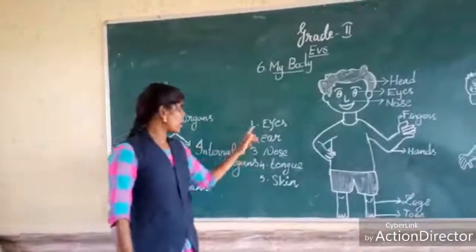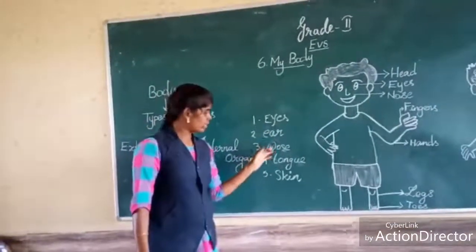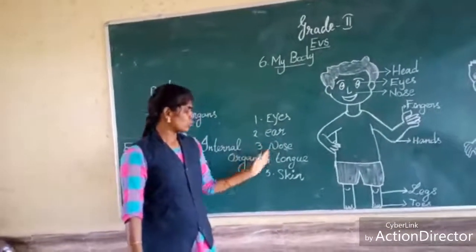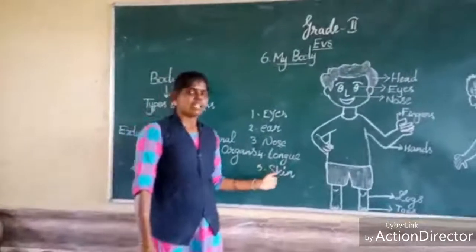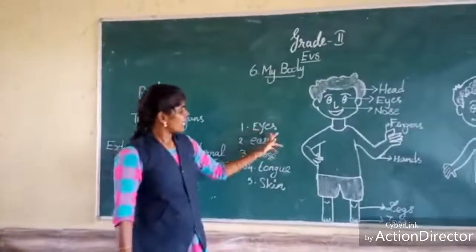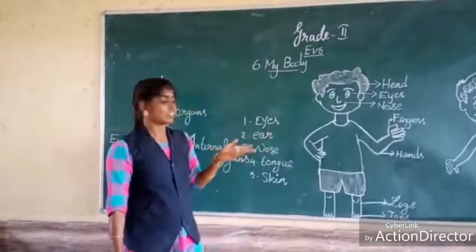How many sense organs do we have? Five sense organs. First one is eyes, second one is ear, third one is nose, fourth one is tongue, fifth one is skin. Eyes are for seeing many things.